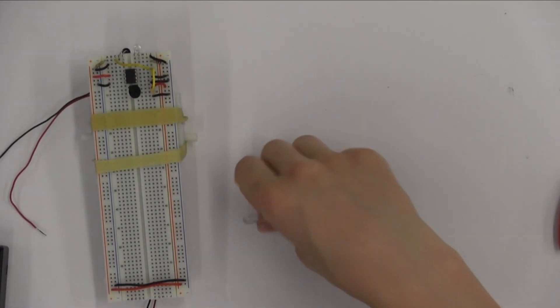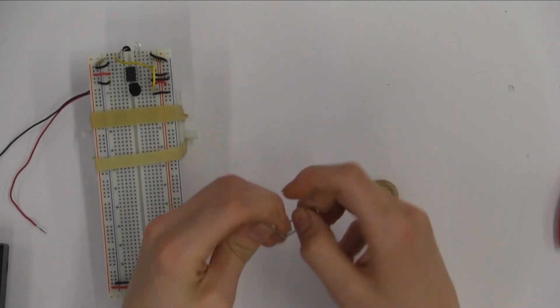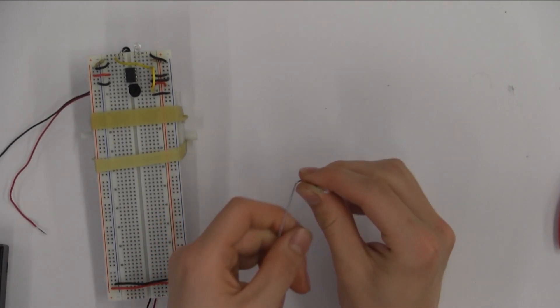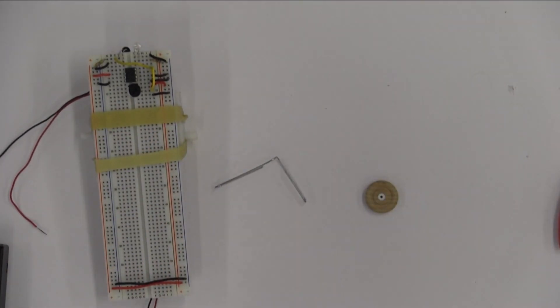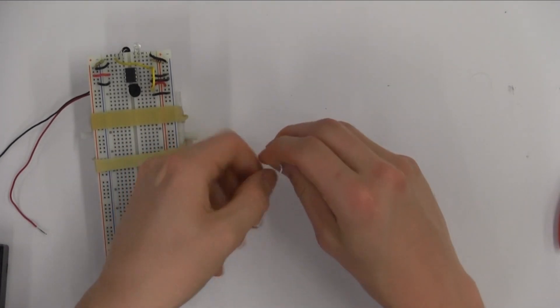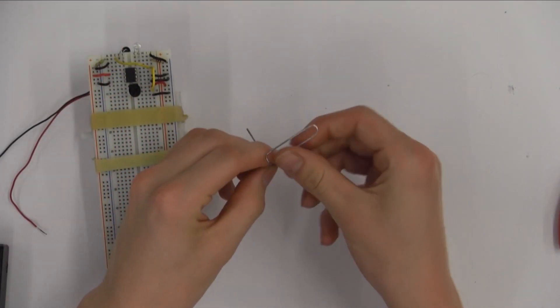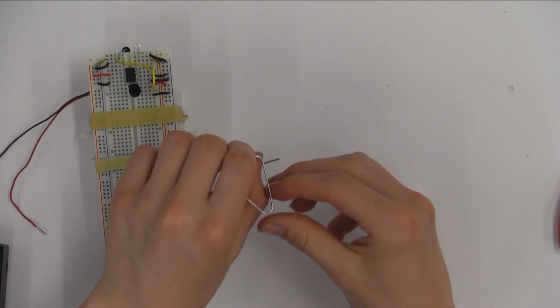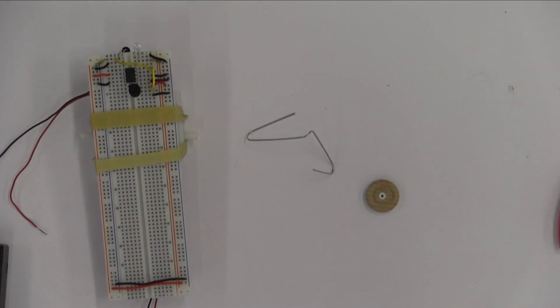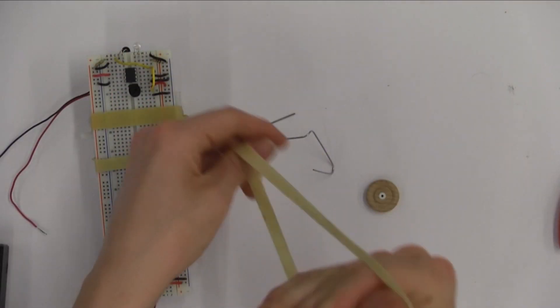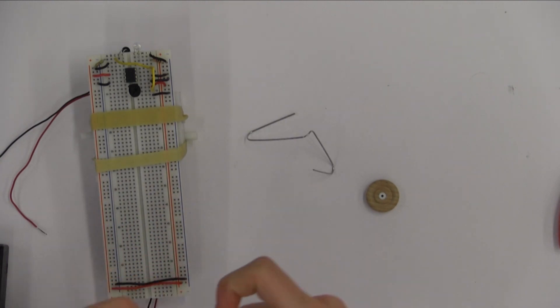Grab your paper clip and wooden wheel and bend the paper clip as shown. Using a double wrapped rubber band, mount the paper clip and wheel.